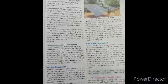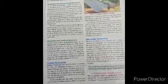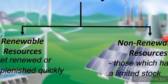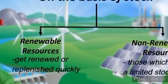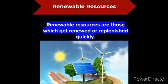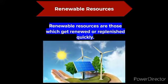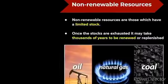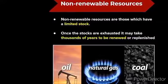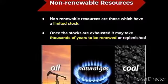On the basis of durability or stock, resources are classified as renewable and non-renewable. Renewable resources are those which can be renewed or replenished quickly — for example, solar energy. Non-renewable resources have a limited stock and may take thousands of years to replenish — for example, coal and petroleum.